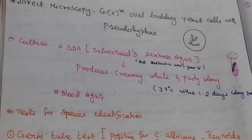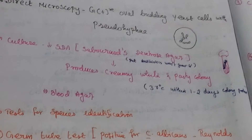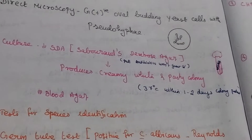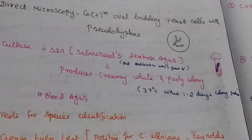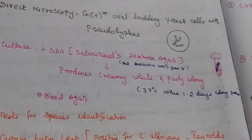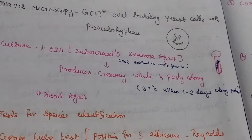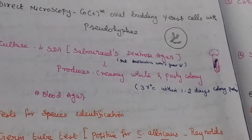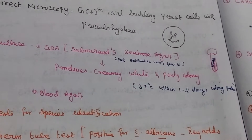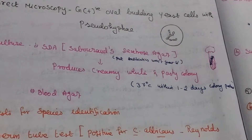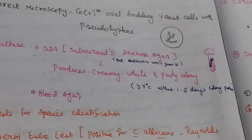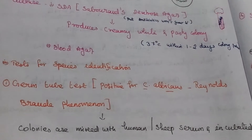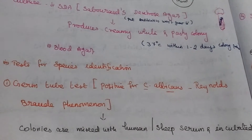For culturing, SDA — Sabouraud dextrose agar — is the most common medium for fungi. It produces creamy white, pasty colonies at 37 degrees Celsius incubation within 1 to 2 days.